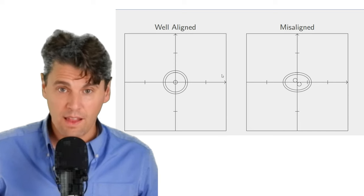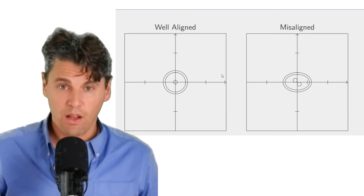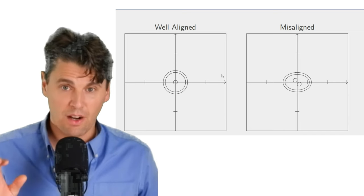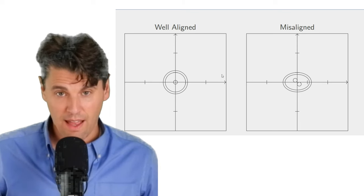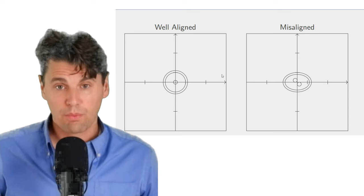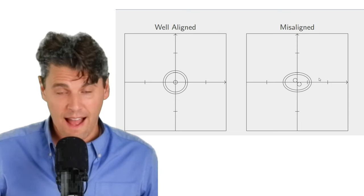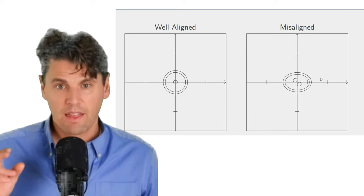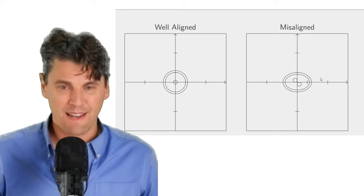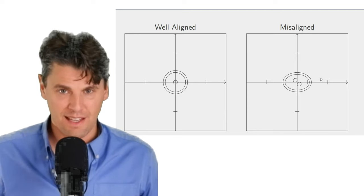When we take images of this setup, you can see in the well-aligned scenario, both of those BBs are going to lie on top of one another. And in the case that there's not good alignment of that central ray, those BBs actually are not going to lie on top of one another. So if we see two separate BBs, that's actually saying that we do not have good alignment of the central ray.